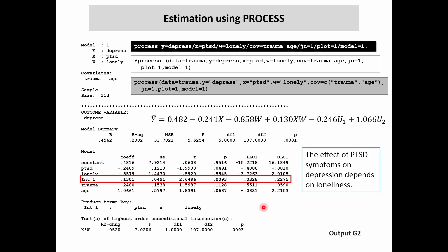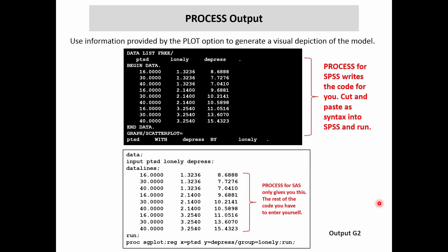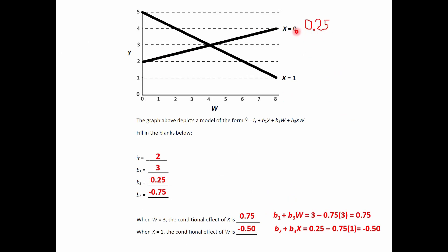It seems from this analysis that the effect of PTSD on depression does vary as a function of loneliness. Here's our equation, but as you know, this is very abstract. In order to make any kind of sense of this mathematical equation, we're going to need to draw a picture of the model, so we'll go ahead and do that with the aid of process. Down toward the bottom of the process output you will find: when X is zero, the effect of W is 0.25. If we change X by one unit, that's a transition from one line to another. Y is five here and here it looks like one — that's a change of four.